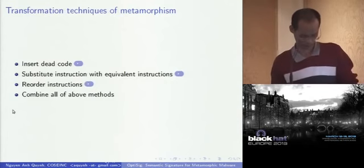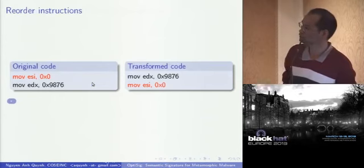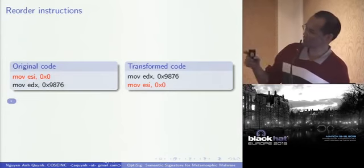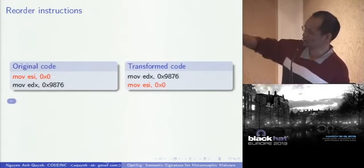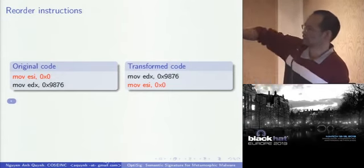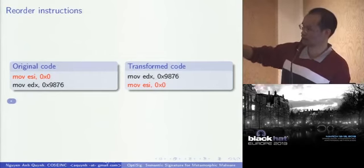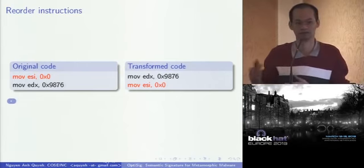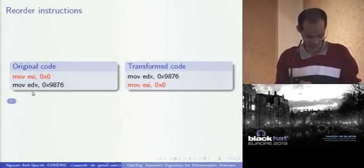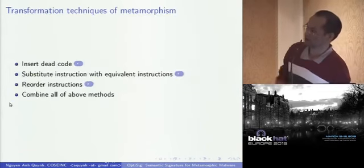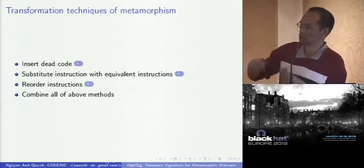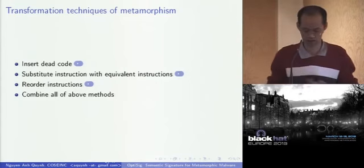The third method is reorder instruction. On the left, the original code has 'copy 0 to ESI' followed by 'copy something to EDX'. When the malware transforms the code, it reorders these two instructions. The right side and left side do exactly the same thing, but syntactically they are different. Finally, you can combine all three methods with each other and generate very complicated code.